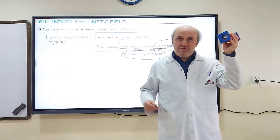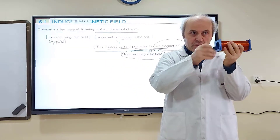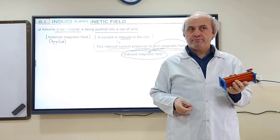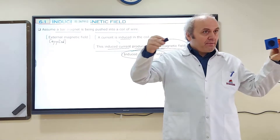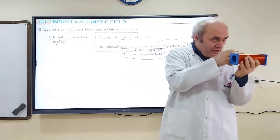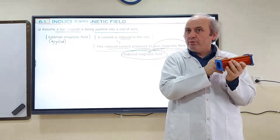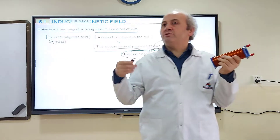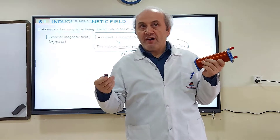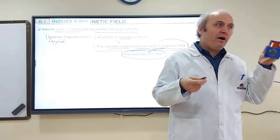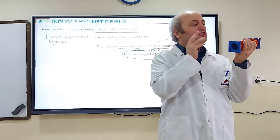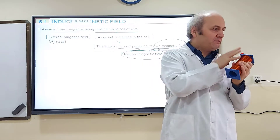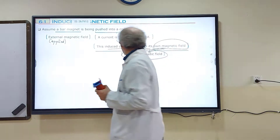If there is a magnetic field and we make them closer, of course every magnetic field has a direction. If there's a current, the coil must have a north and south pole. Now we are going to find a way — learn a way — to determine which side is north pole and which side is south pole.